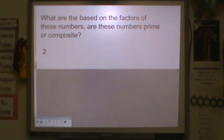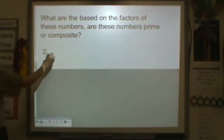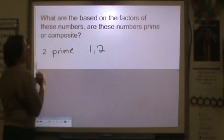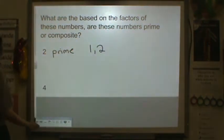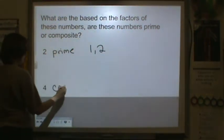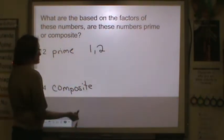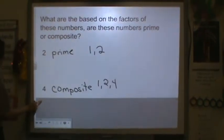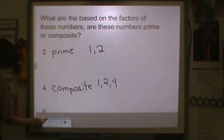We just figured out, are these numbers prime or composite? Well, 2 is prime because the only two factors are 1 and 2. 4 is composite. It has three factors: 1, 2, and 4. More than two factors, it is composite.